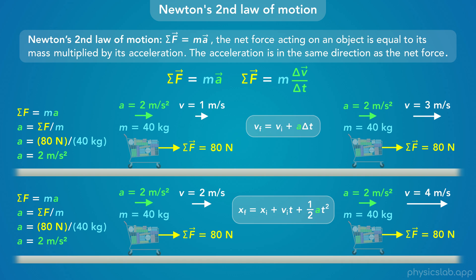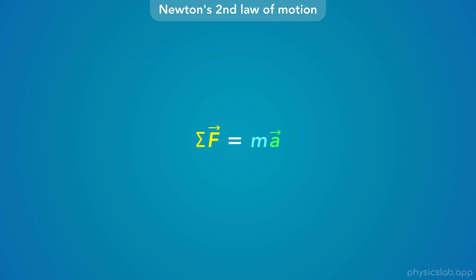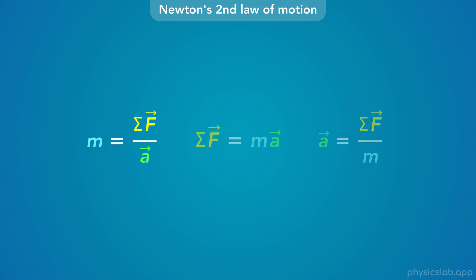Newton's second law only gives us the acceleration, and then we can use kinematics to figure out velocity or position at a certain time. Since we use this equation a lot, it helps to have strong intuition for how the variables are related. In the form a = F/m, if you apply a net force and measure acceleration, you can calculate mass. If it accelerates faster, mass is smaller; if it accelerates slower, mass is greater. If the denominator is smaller, we divide by a smaller number and the fraction is bigger, so acceleration is larger.